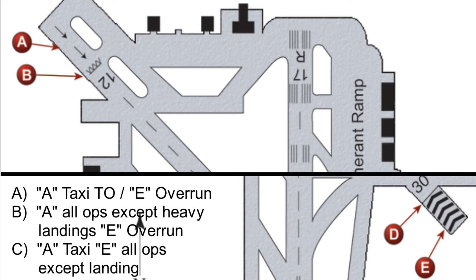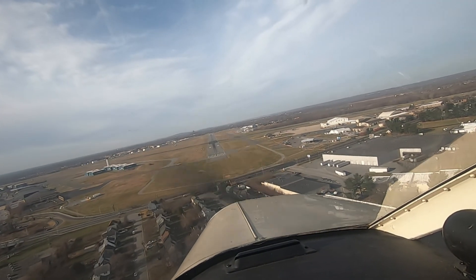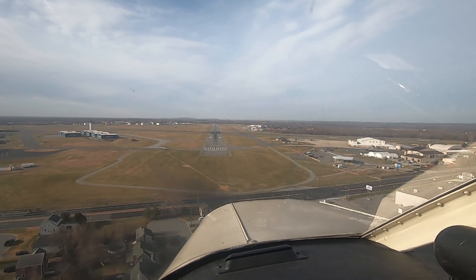Question number three, the last question for today: what is the difference between area A and area E on the airport depicted? Answer A: A may be used for taxi and takeoff, E may only be used as an overrun. Answer B: A may be used for all operations except heavy aircraft landings, E may be used only as an overrun. The correct answer is A — A may be used for taxi and takeoff, E may be used only as an overrun. B and C are incorrect because displaced thresholds cannot be used for landing and area E can only be used as an overrun. Thanks everyone for riding along today — we hope you will join us on a future flight, and thanks for flying J1 Aviation. See you next time.